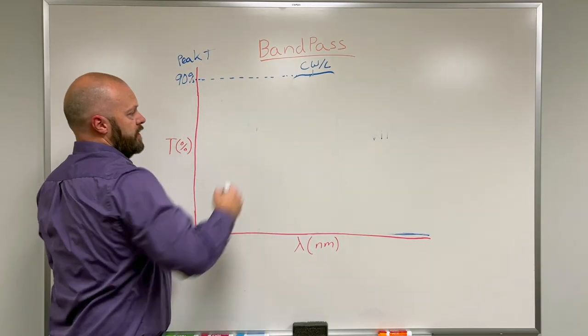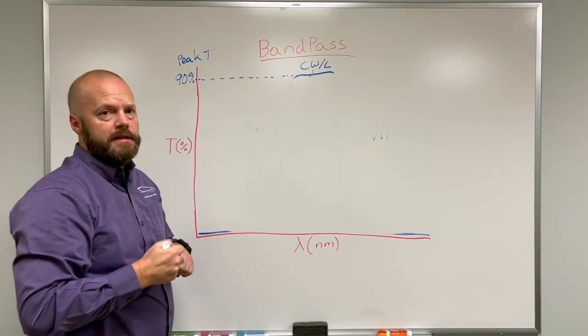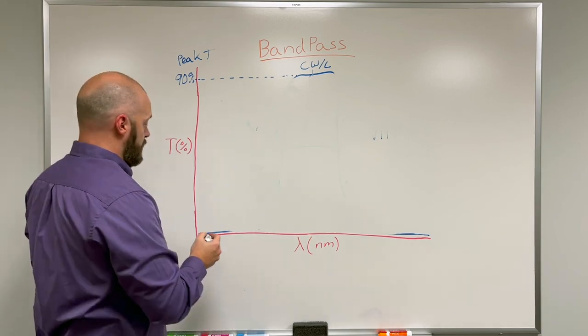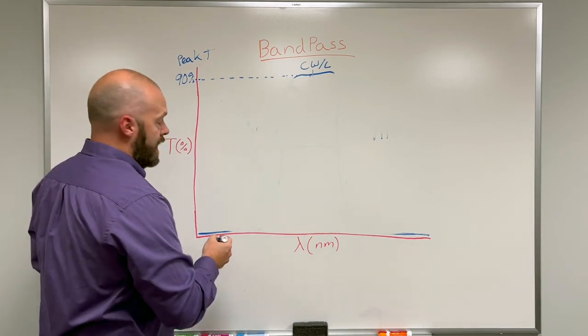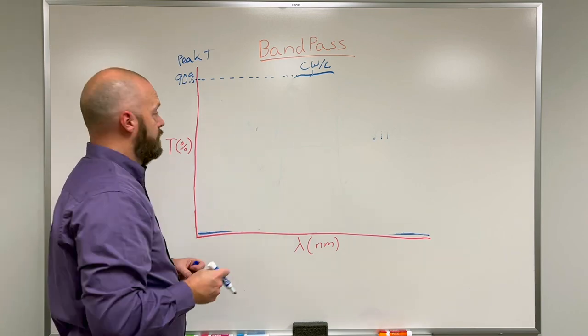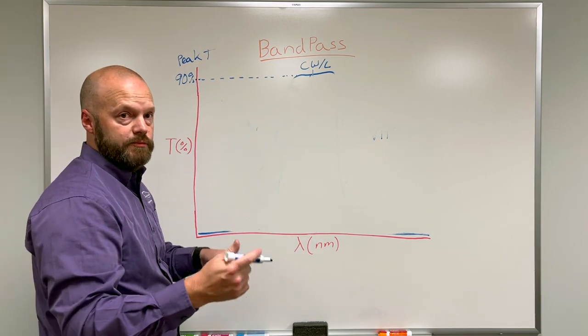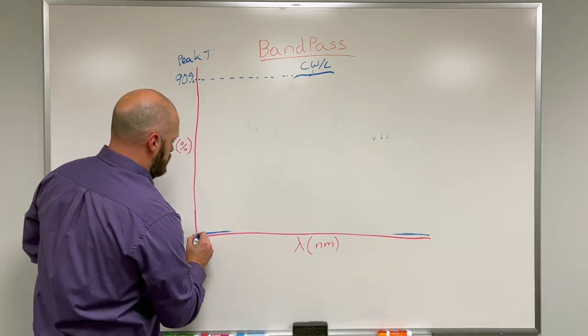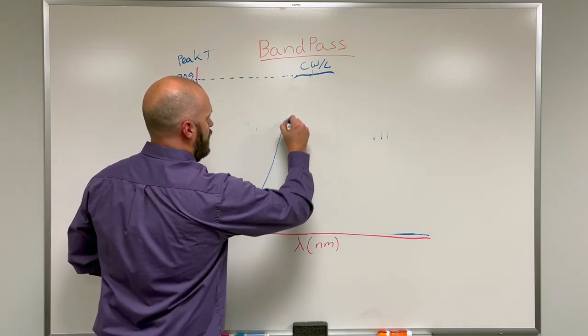You're still going to have a center wavelength, but the MDMs have more of a Gaussian shape to them. They're usually wider, they can be 10 nanometers, 50, maybe 80 nanometers, those are some typical bandwidths, but it looks more like this.